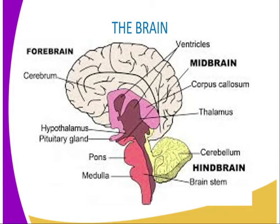The brain is a dedicated nervous organ, which is enclosed in a bony structure called the skull or the cranium. It is covered by a system of protective membranes called meninges. The meninges consist of the dura, the pia, and the arachnoid.